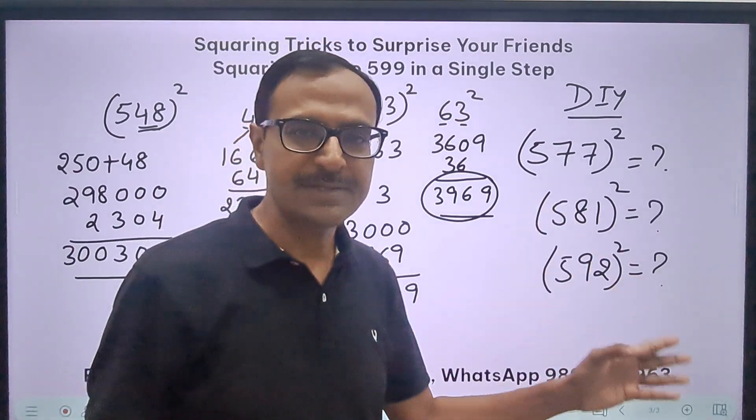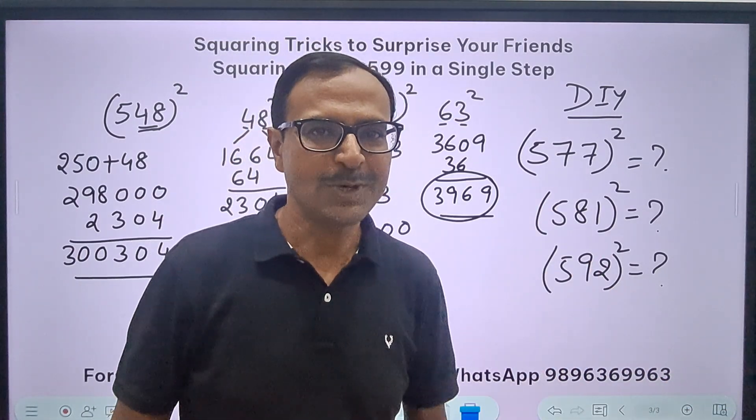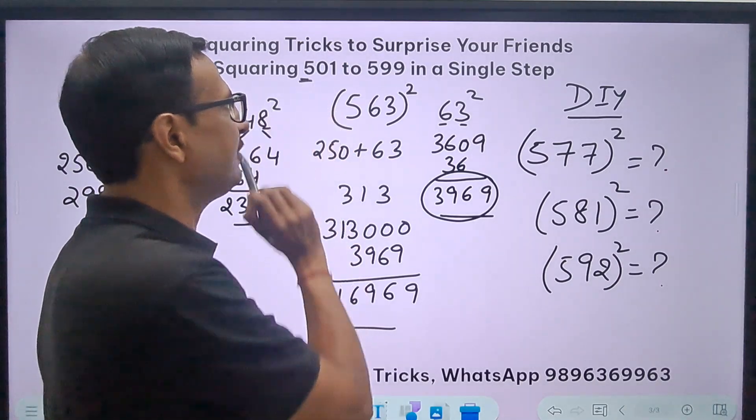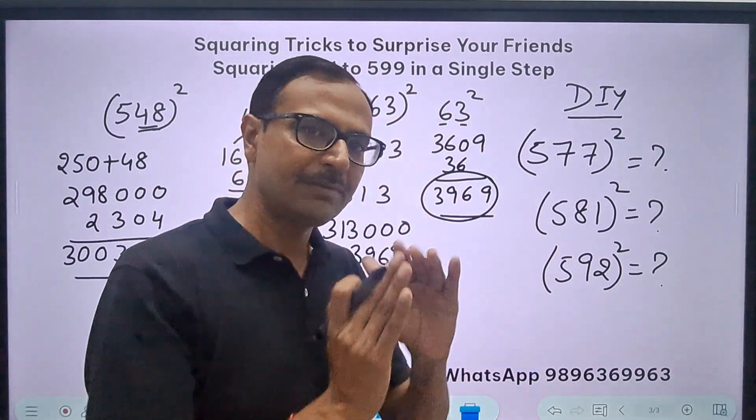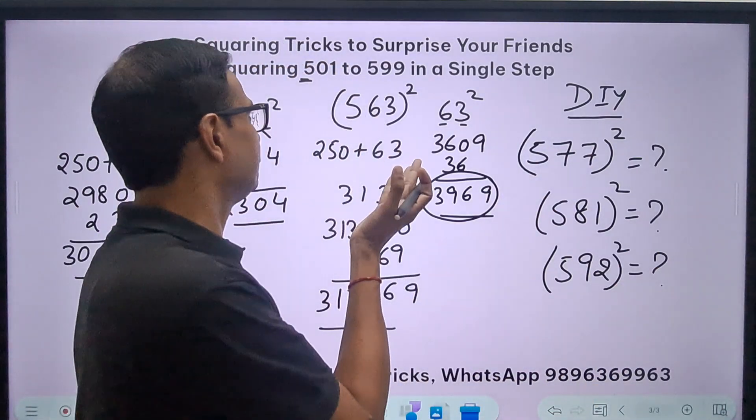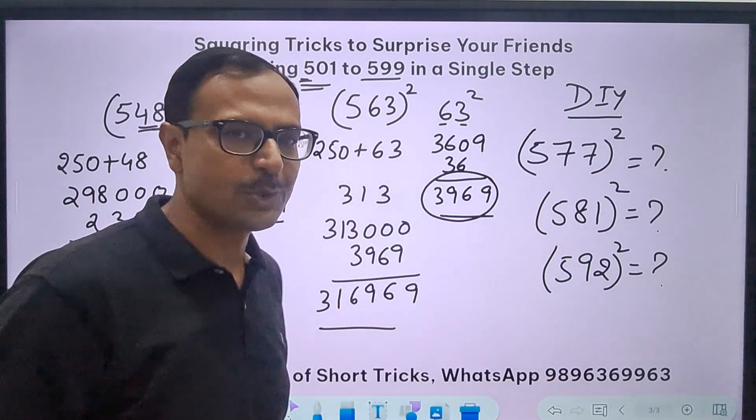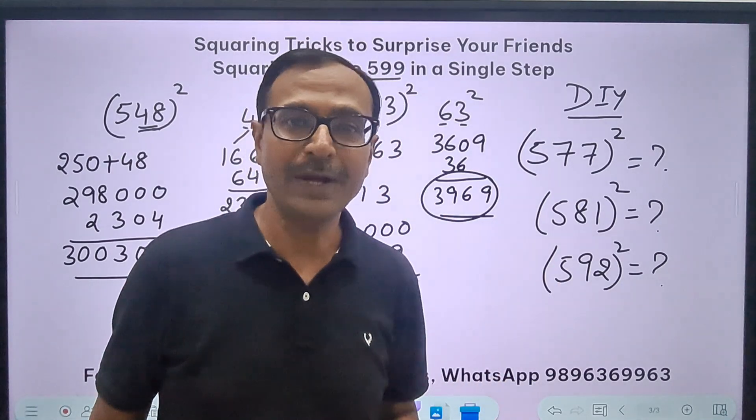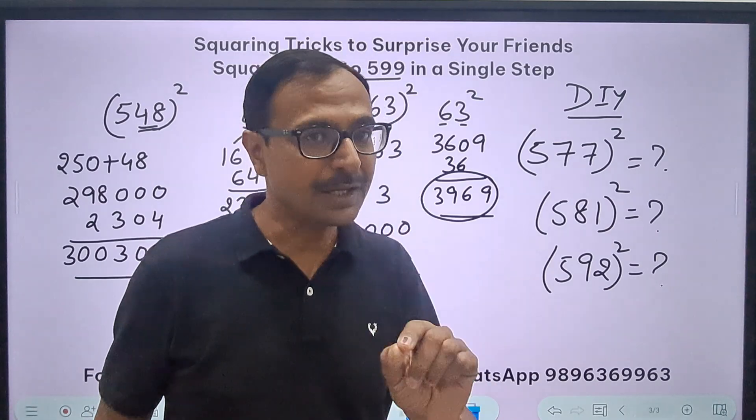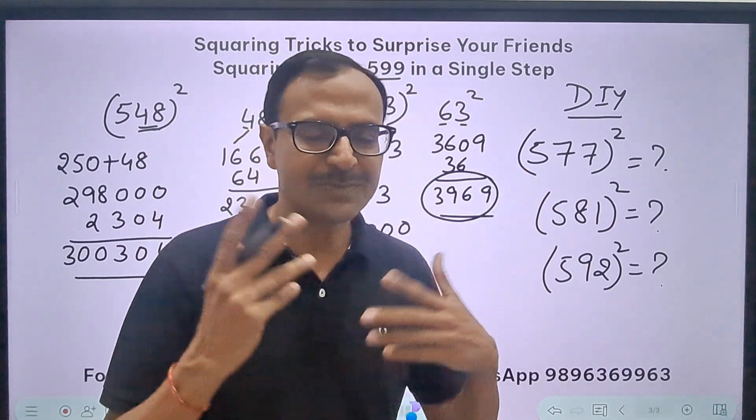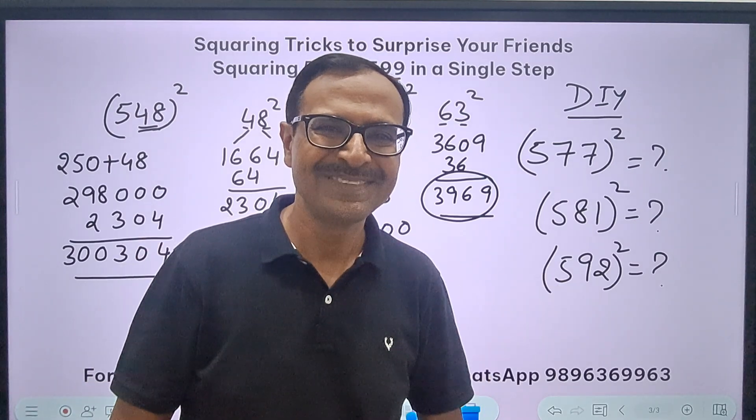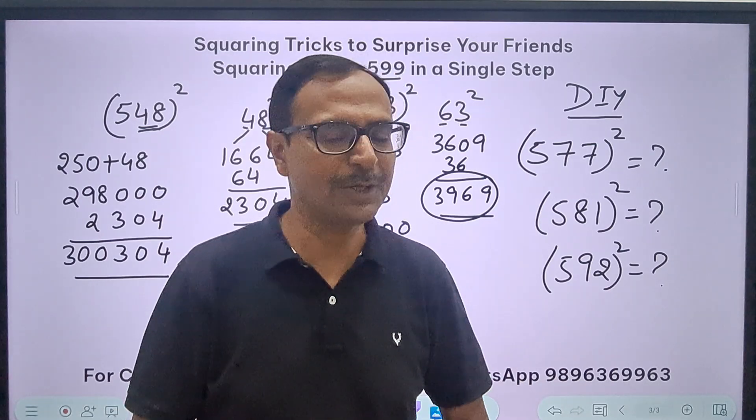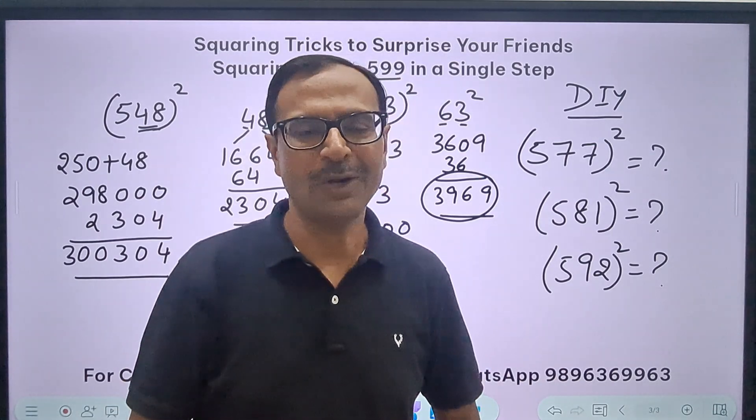I hope you enjoyed the trick. Now you can solve and find the squares of numbers starting with 5, whether it's a two-digit number between 51 and 59, or a three-digit number from 501 to 599. Just try and experiment with this, and I'm sure you'll be able to apply this concept to find squares of four-digit numbers starting with 5. I'm giving you a thought - just work on that and let me know in the comments if it works. If you enjoyed this video, do share it with your friends. Don't forget to subscribe to the channel and click the bell-shaped icon to get all the notifications. Thanks for watching and all the best.